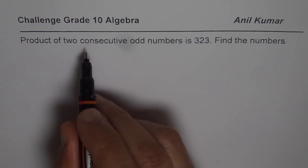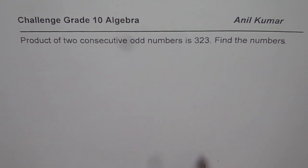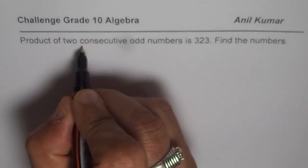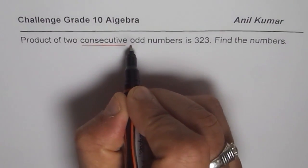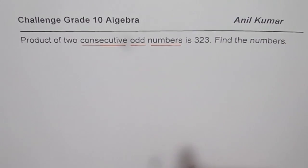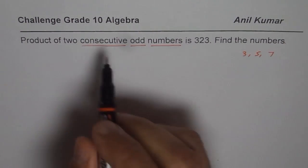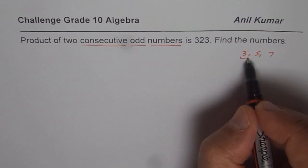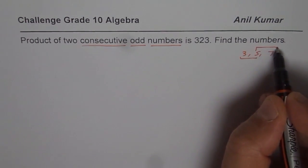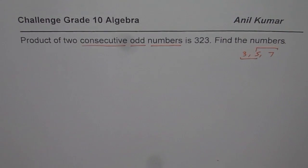Now here what are consecutive odd numbers? Let us understand this term consecutive and then we have odd numbers. So when we say odd numbers, odd numbers are like 3, 5, 7 and all. And consecutive are the ones which come together like 3, 5 or 5, 7. So odd numbers coming together will be termed as consecutive odd numbers.